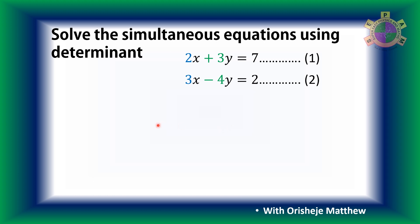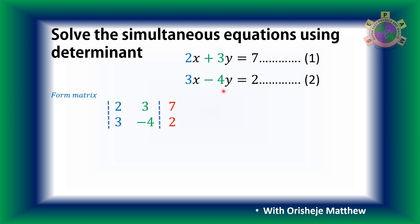So we form a matrix. The first column has coefficients 2 and 3 — the coefficients of x. Then 3 and negative 4 — the coefficients of y. Then 7 and 2 — those are the constant values of the simultaneous equations.